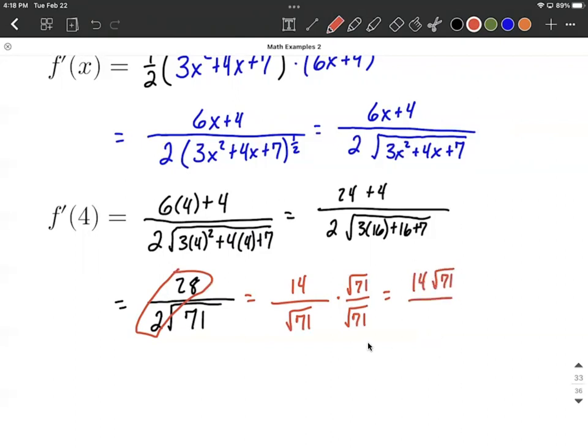And our denominator, when you have two of these radicals multiplied together, since they're both square roots, that works itself out just to be 71. And that's the very cleanest, exact answer we can get to in this case.